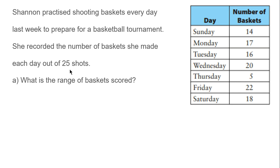Shannon practiced shooting baskets every day last week to prepare for a basketball tournament. Remember what an outlier is. An outlier is a number that doesn't really belong. So, if we look at these numbers, she recorded the number of baskets she made each day out of 25 shots. What's the range of baskets that she made? Lowest is 5, highest is 22. So, 22 minus 5 equals 17. The range would be 17.